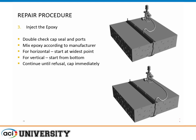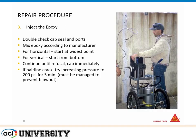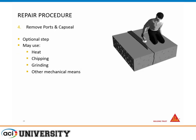Here's probably one of the best application photos I've ever seen — that's basically a perfect capsule and a perfect application. This is what happens when you have a blowout: low-viscosity epoxy running out of the crack, so most of the material that's supposed to be inside is now outside and curing. Now you have a crack that's half-filled, which is a very difficult situation to remedy. After the capsule cures, double-check for gaps or loose ports, then mix your epoxy and start injecting. For horizontal cracks, start at the widest point; for vertical, start from the bottom and work upward. Continue until refusal — wait until you see epoxy come out of the adjacent port, then cap it and move on. If you're having issues with fine cracks, you can increase pressure to about 200 psi for maybe five minutes, keeping a close eye on what's happening. Ports and capsule can be removed with a grinder at the end, but that's optional and typically only for aesthetics.